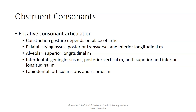The articulation of fricative consonants depends on the place. For the palatal fricatives, the styloglossus, posterior transverse, and inferior longitudinal muscles help pull the tongue blade up toward the hard palate while keeping the tongue tip from touching the alveolar ridge. For alveolar fricatives, the superior longitudinal muscle raises the tongue tip to the alveolar ridge. For interdental fricatives, the genioglossus advances the tongue body and the combination of superior and inferior longitudinal muscles creates a stiffened tongue tip placed between the teeth. For labiodental fricatives, the orbicularis oris and risorius muscles raise the lower lip toward the upper teeth.